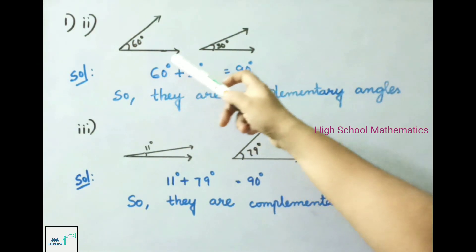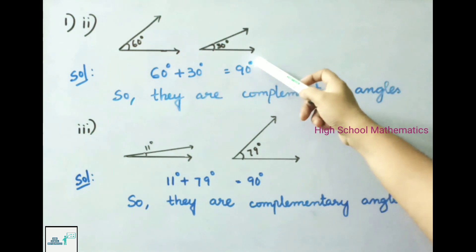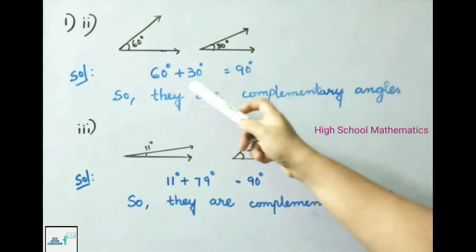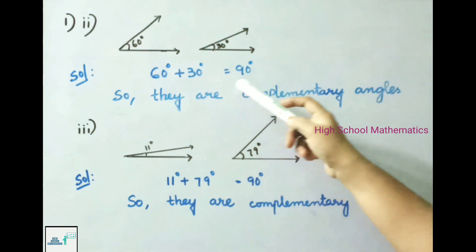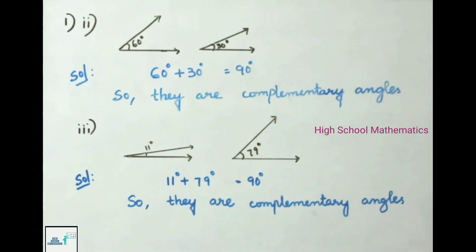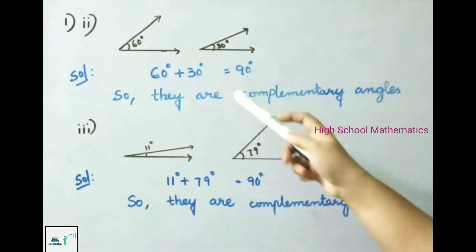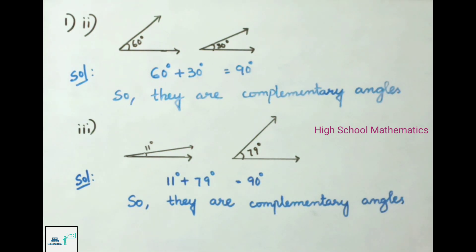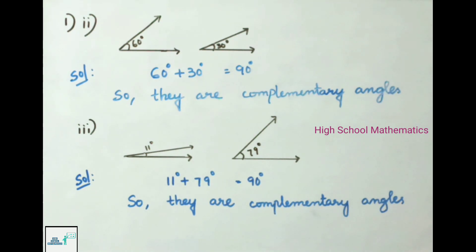Second pair: 60 degrees and 30 degrees — the sum is 60 plus 30, that is 90 degrees, so they are complementary angles. Third pair: 11 degrees and 79 degrees — the sum is 90 degrees, so these two are also complementary angles.